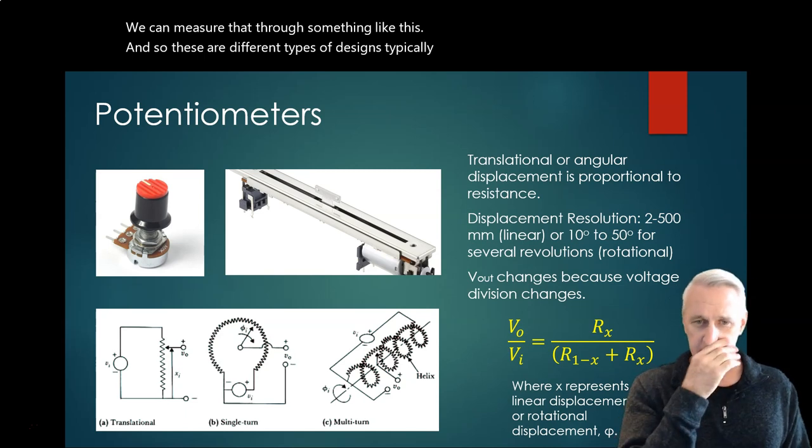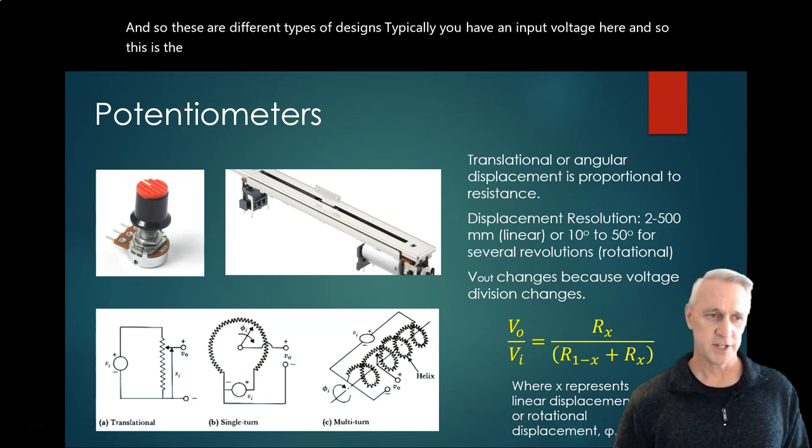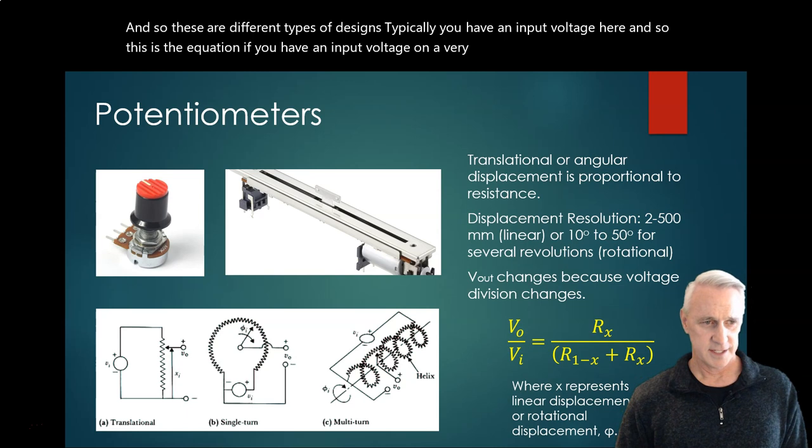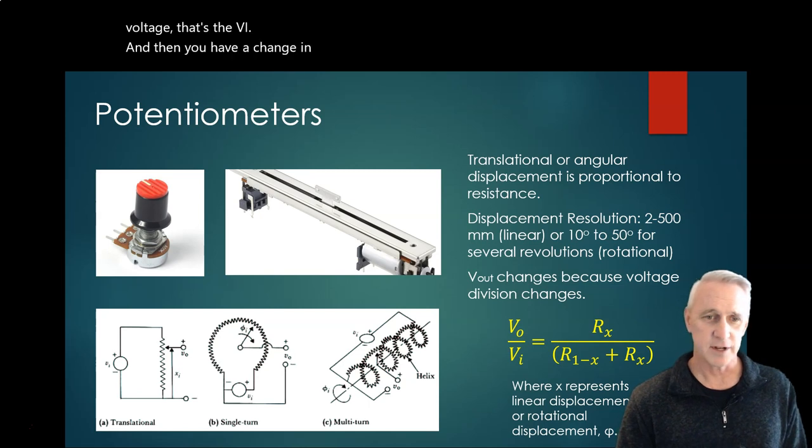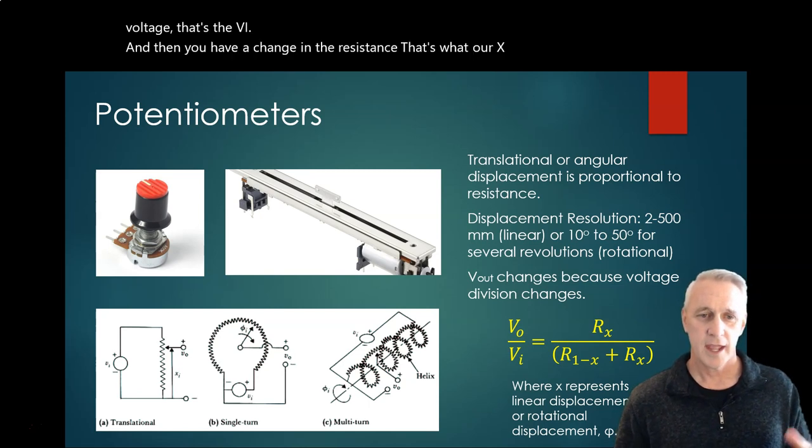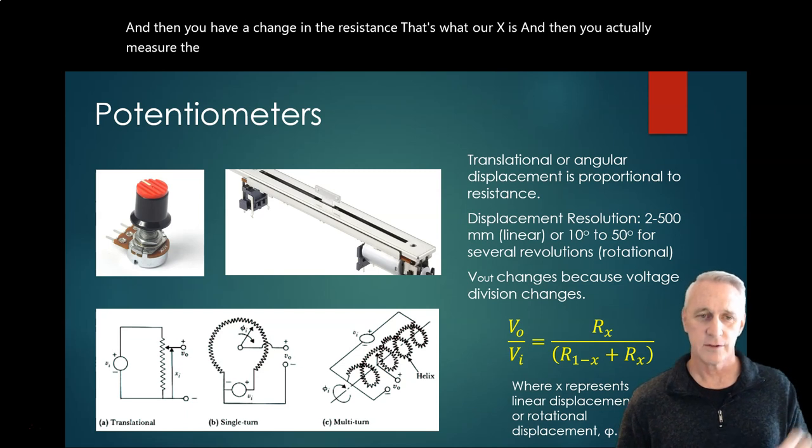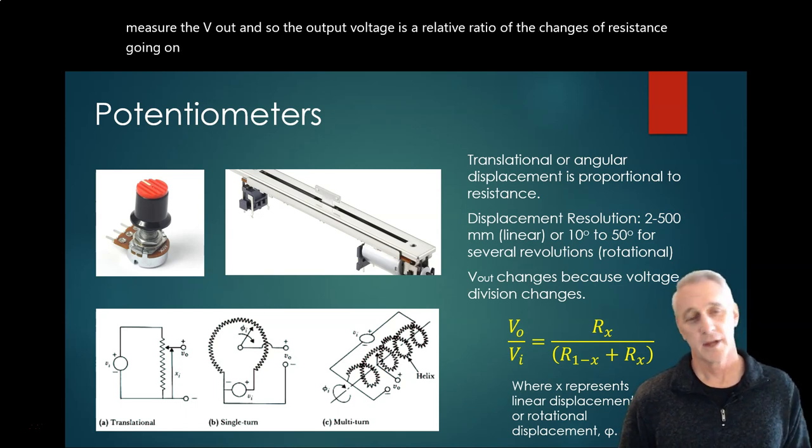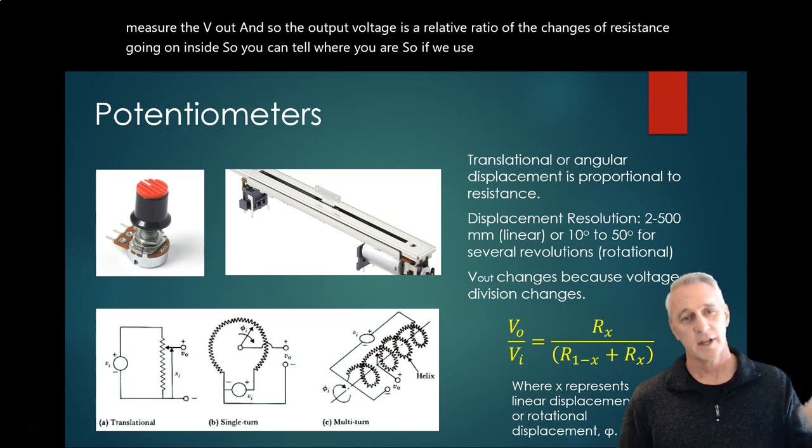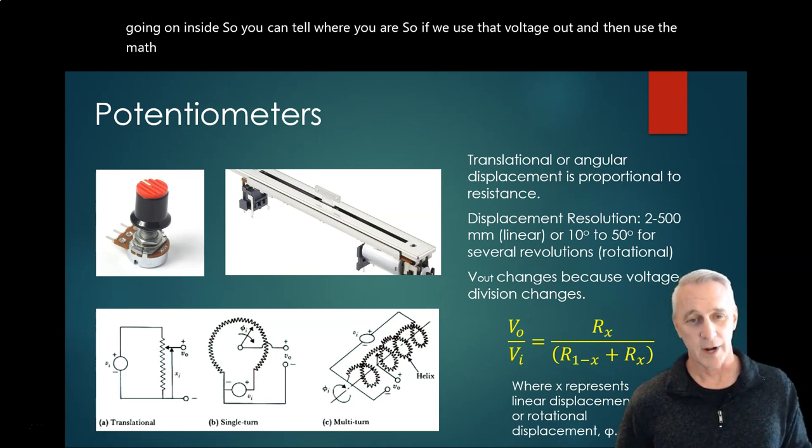Typically, you have an input voltage here. And so this is the equation if you have an input voltage on a very basic system, where you apply a voltage (that's the VI), and then you have a change in the resistance (that's what RX is). And then you actually measure the Vout. So the output voltage is a relative ratio of the changes of resistance going on inside so you can tell where you are. So we use that voltage out and then use the math to figure out where we're actually at.